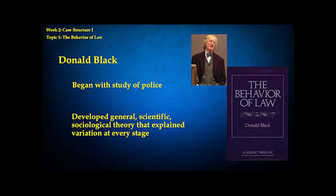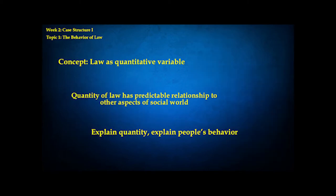The title of the book is The Behavior of Law, and this reflects the attitude that law is a kind of natural phenomenon, much like electricity or magnetism. It's something we can explain in terms of its own behavior. Just like you could have more or less electric charge or magnetism in a situation, you could have more or less law in a situation. A key concept in this theory is looking at law as a quantitative variable.